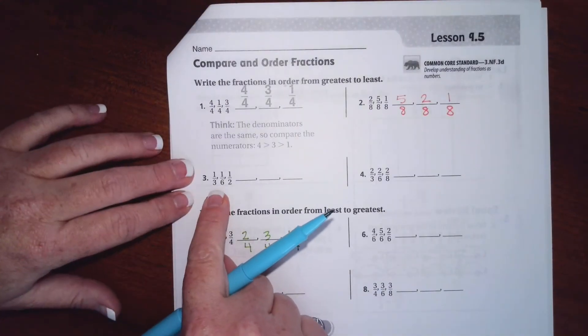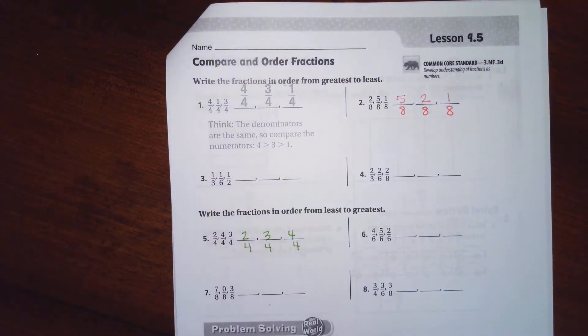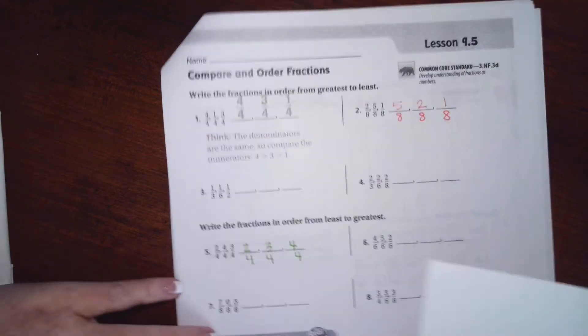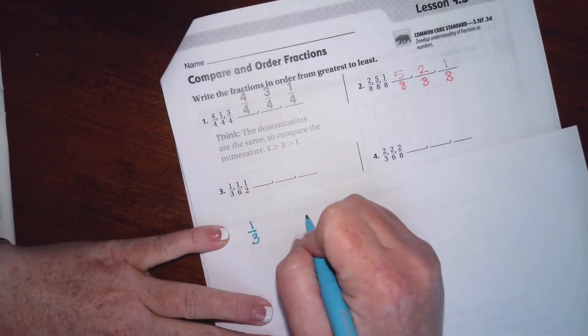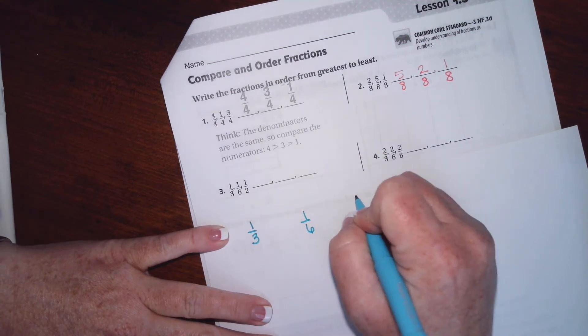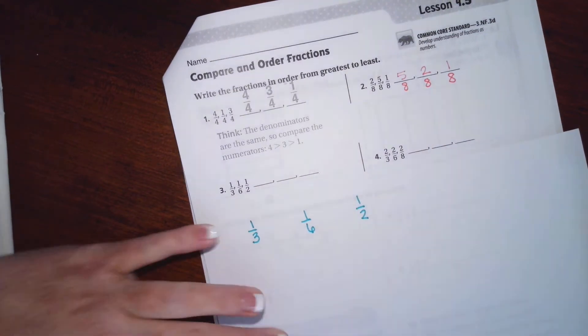All right, but I'm going to go back up here and we're going to try about some handy dandy computer so that I can go ahead and do some math with you. So we have one third, one sixth, and one half.